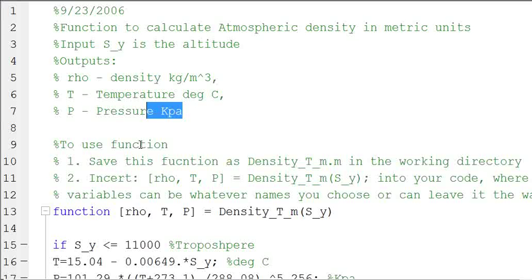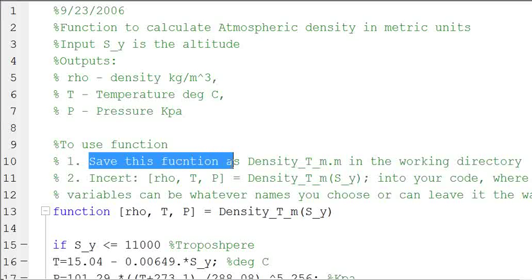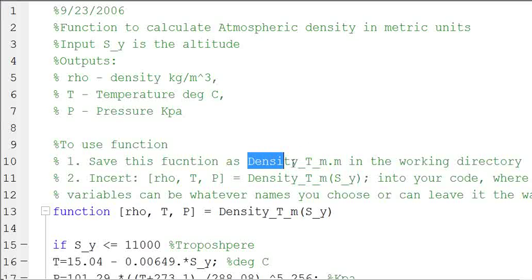So sometimes I like to write directions for how to use the function in case I give it to someone else or forget what I'm doing. To use the function, first we're going to save the function as the name of the function Density_T_m.m in the working directory. So the working directory is just wherever your main script is saved.